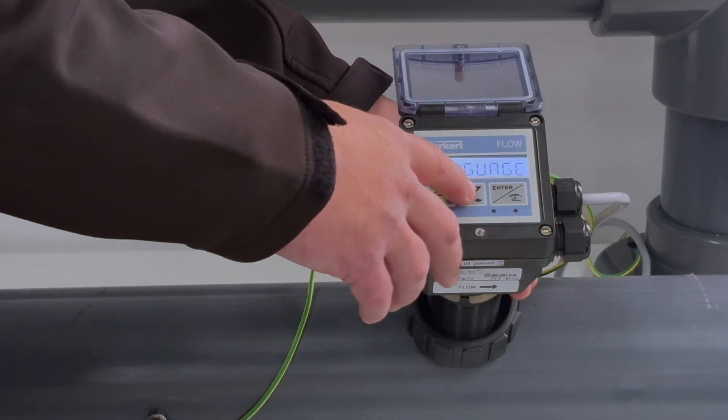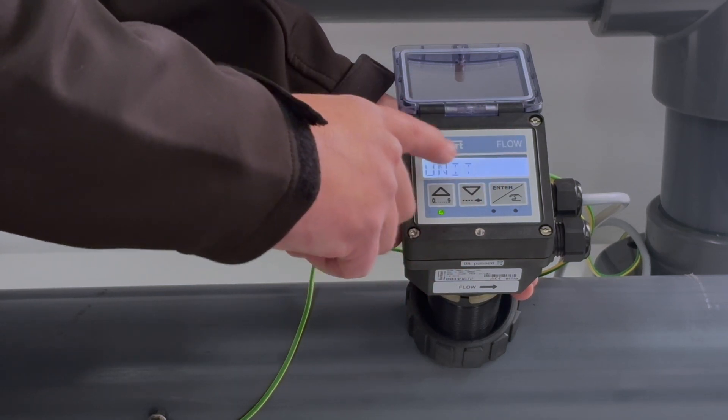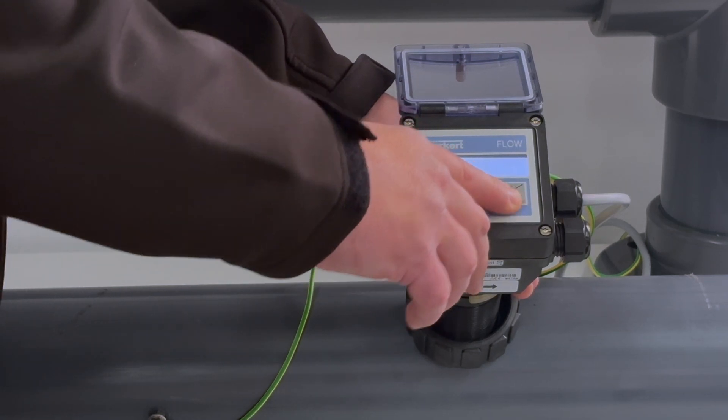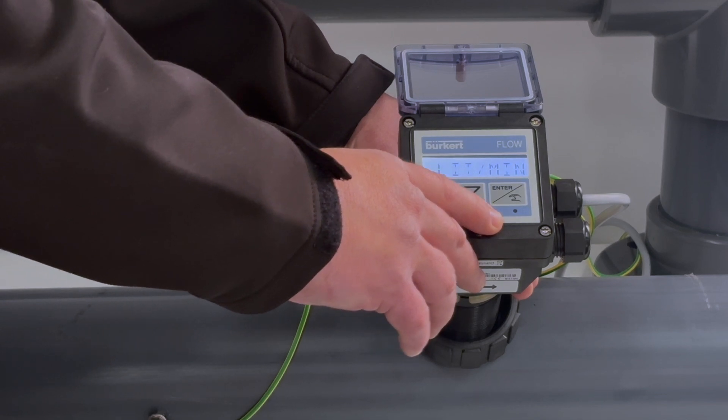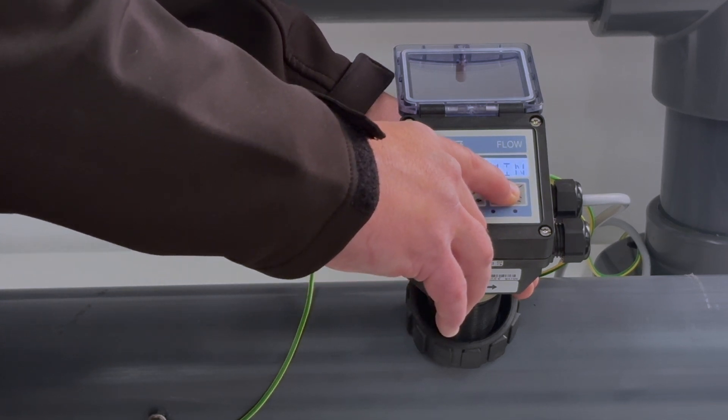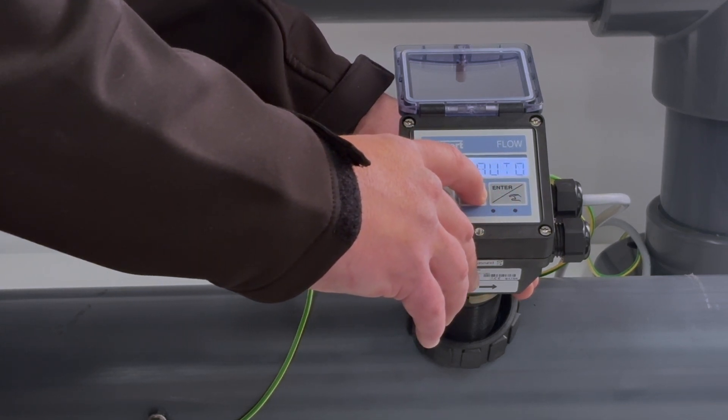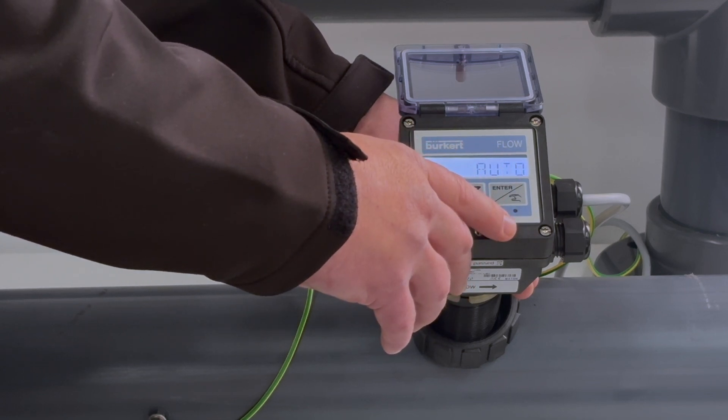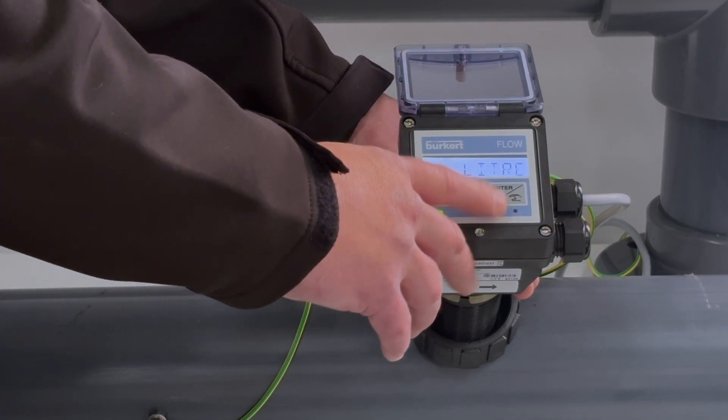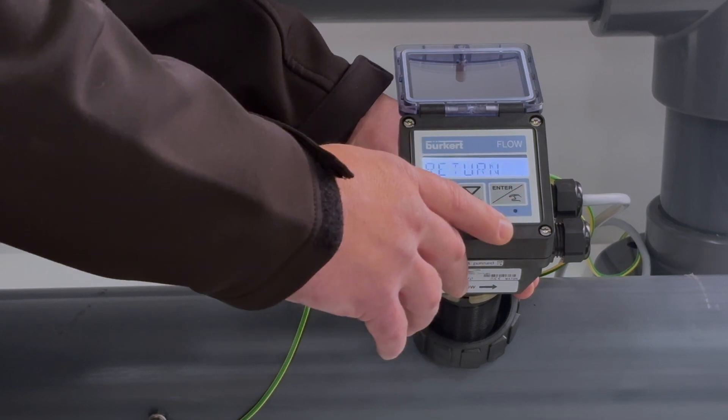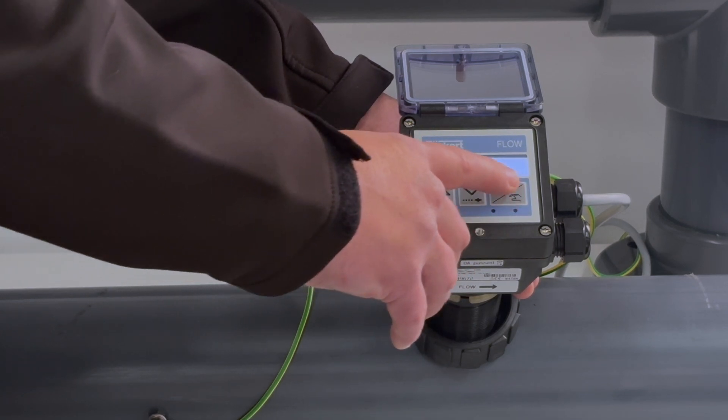Language is set to English in this case. We press down to unit and set our unit. Our unit for flow will be set in liters a minute in our case, verify by pressing enter, and I'm going to do an automatic decimal point in this case. My totalizer is also going to be set for liters in this case. I'm going to return to the main menu by pressing enter.